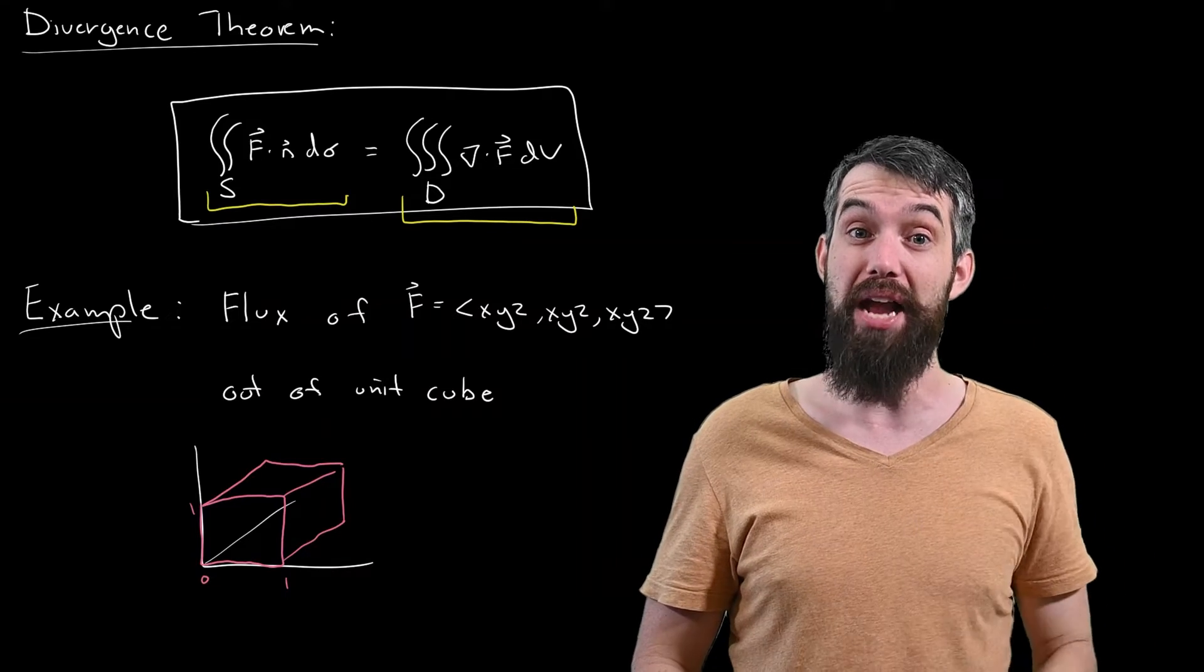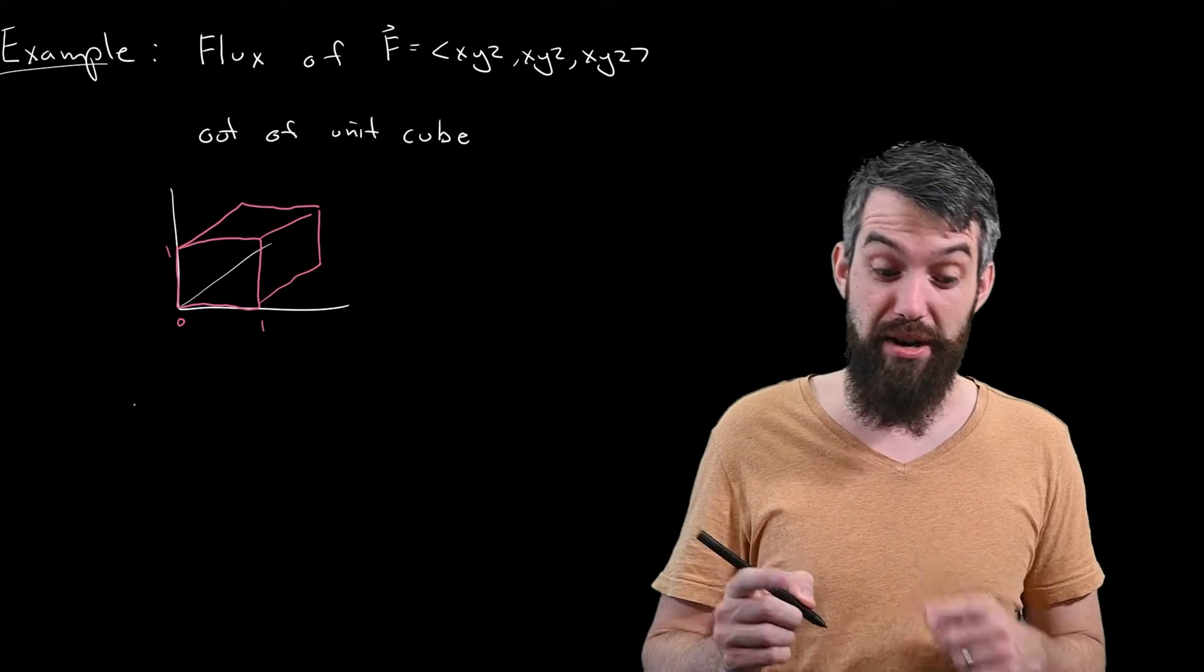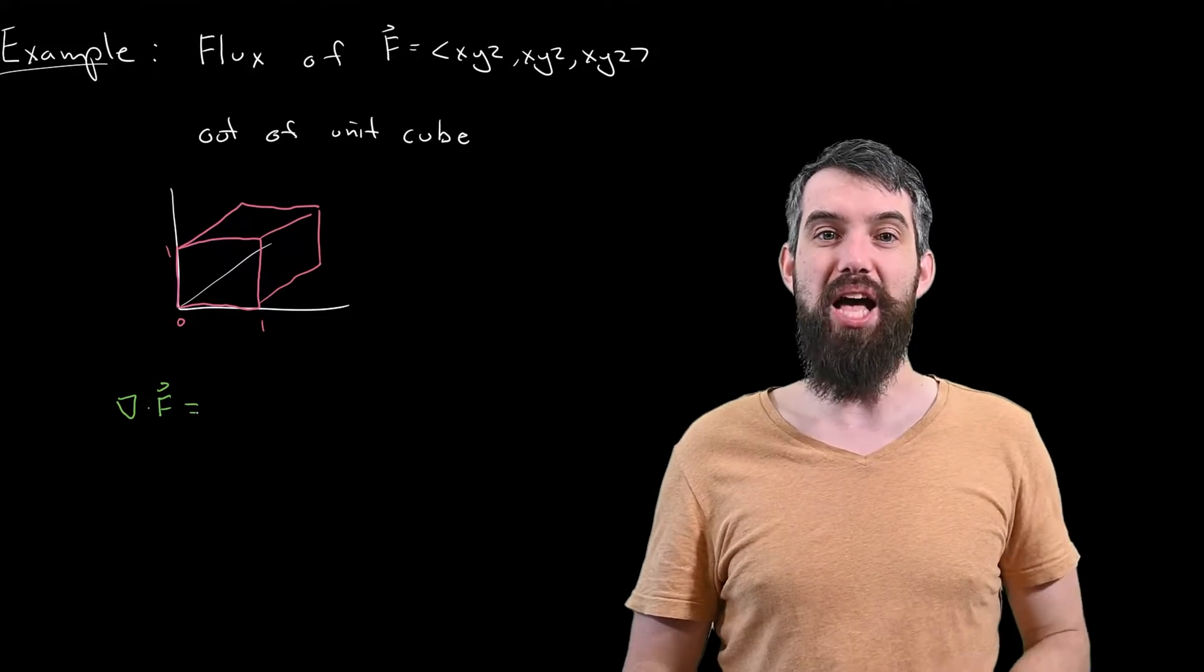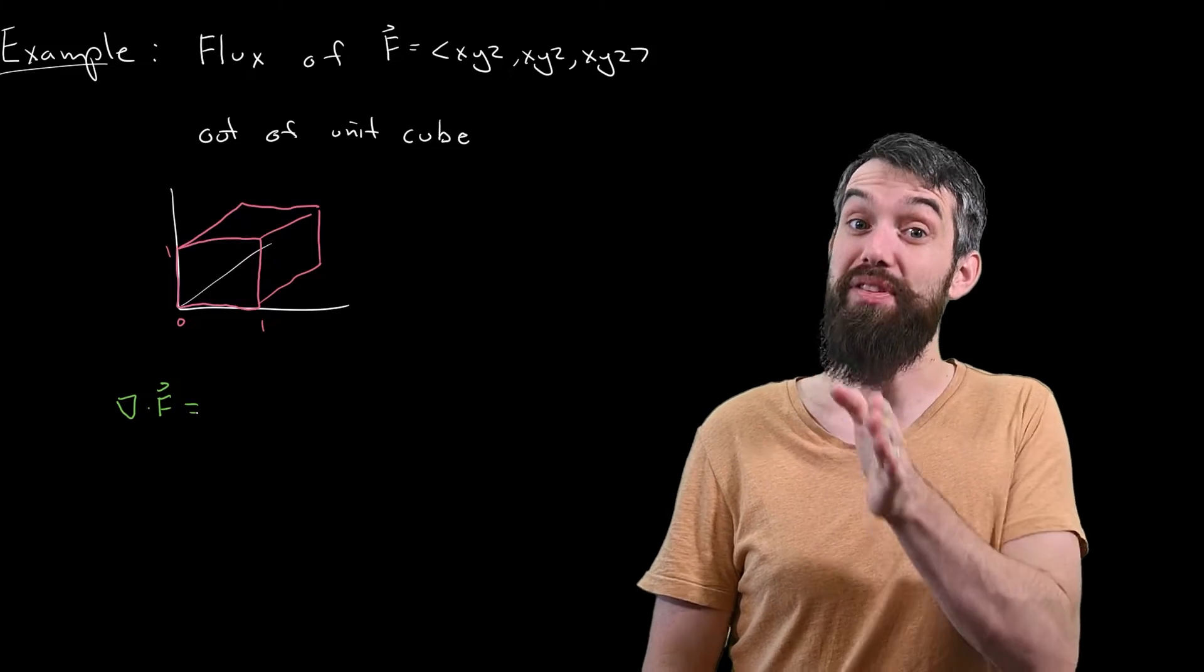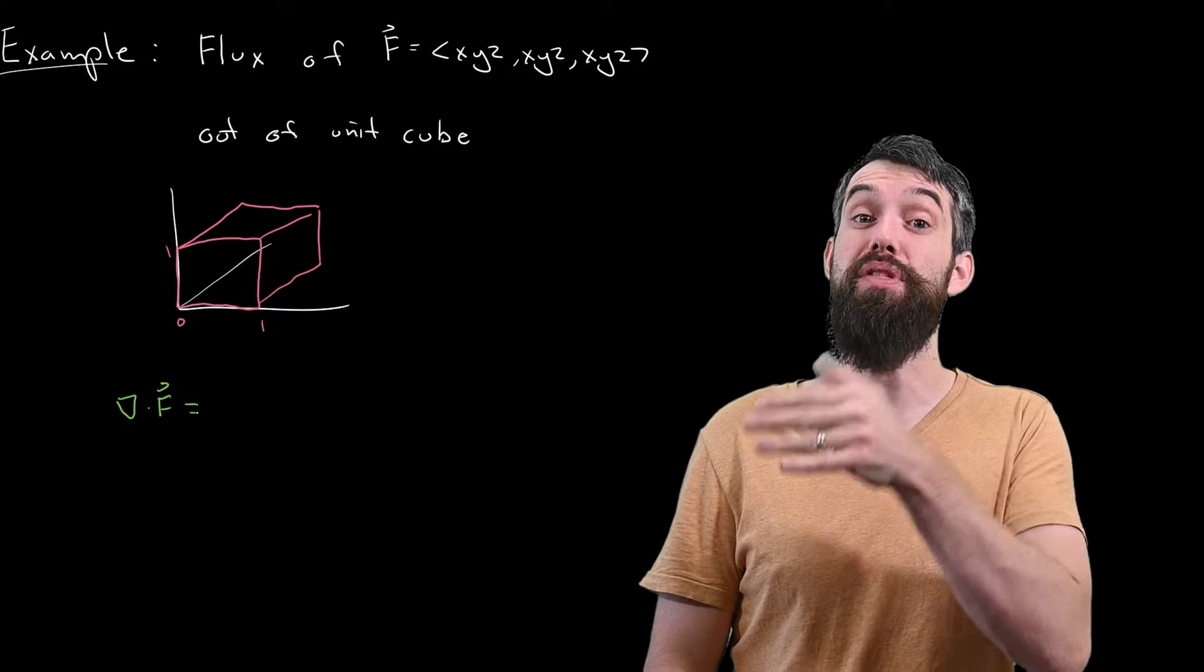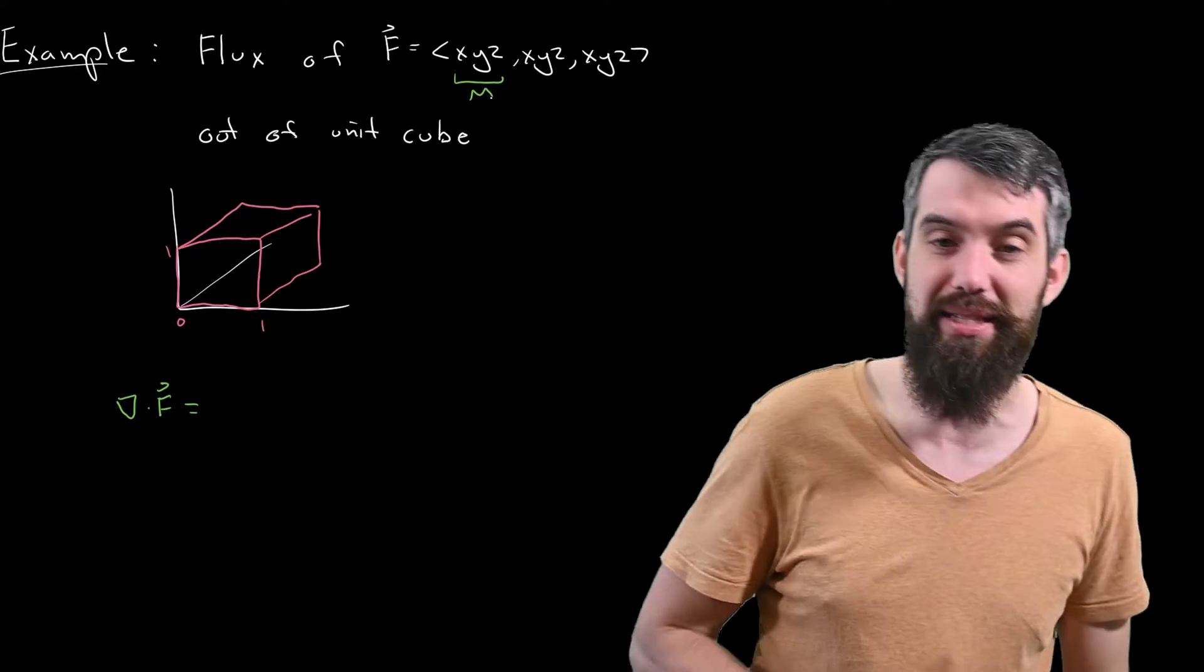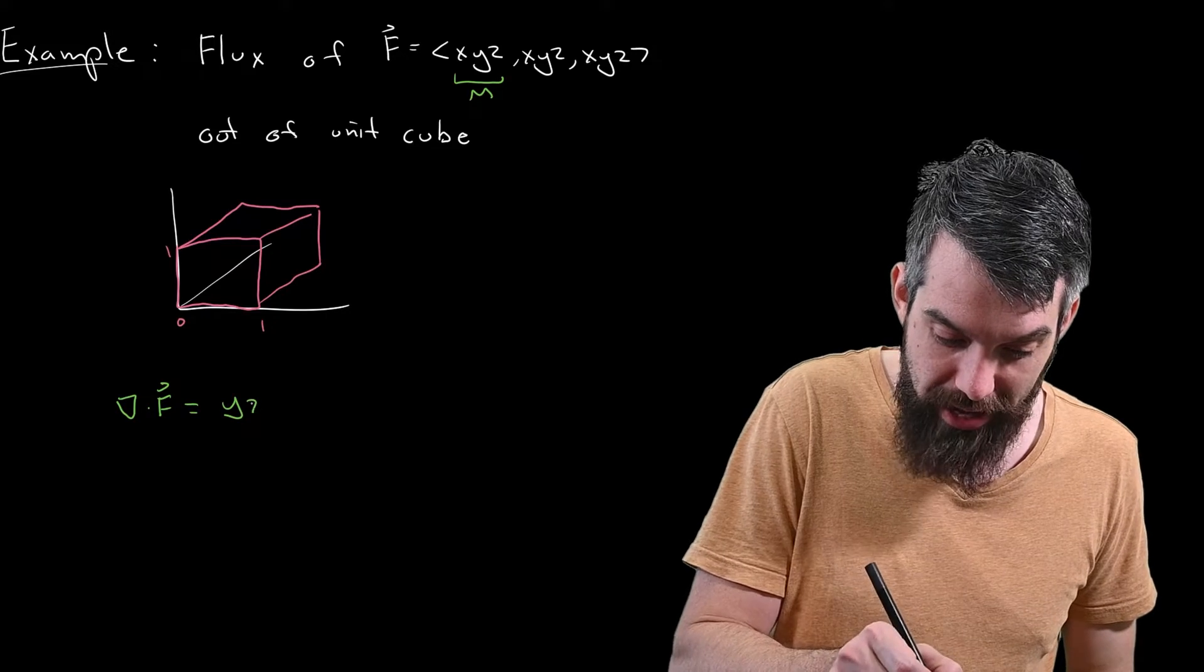So I'm going to use the right side of the divergence theorem. Giving myself a bit more space, the first thing I need to do is compute the divergence of f. So this is the sum of the partial respect to x of the first component, the partial respect to y of the second component, and the partial respect to z of the third component. So the first component here, we'll maybe call it the m, is xyz. The partial of that with respect to x is equal to yz.